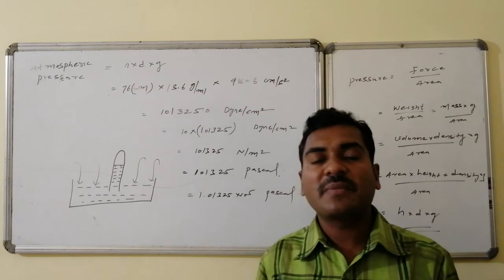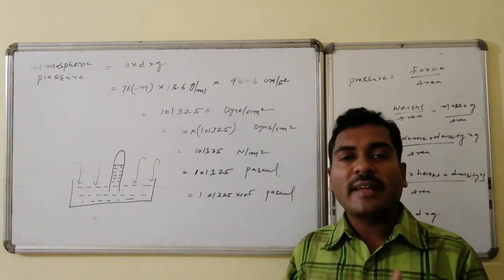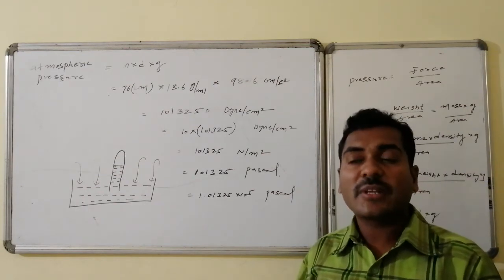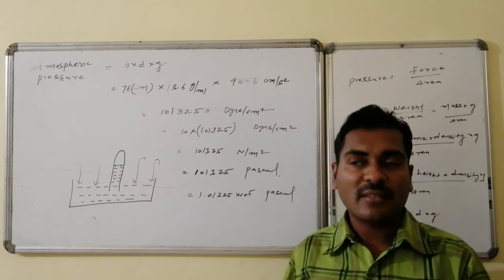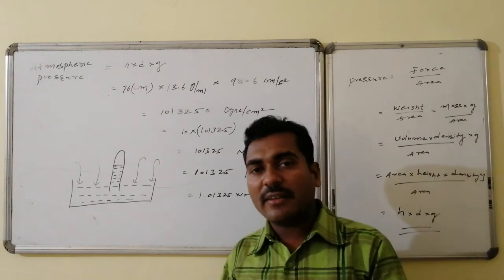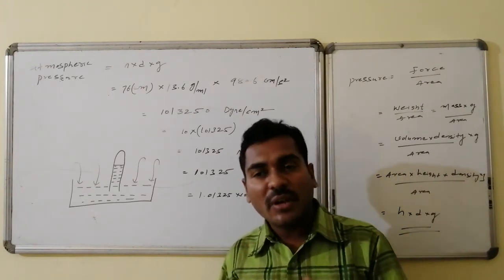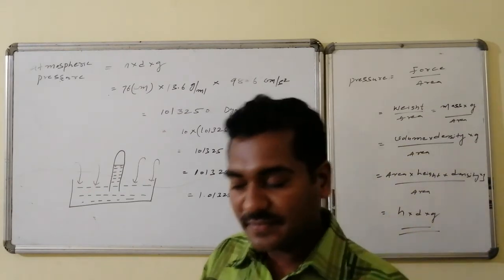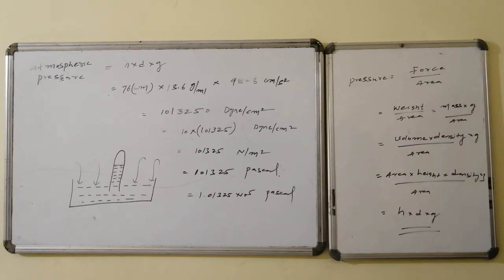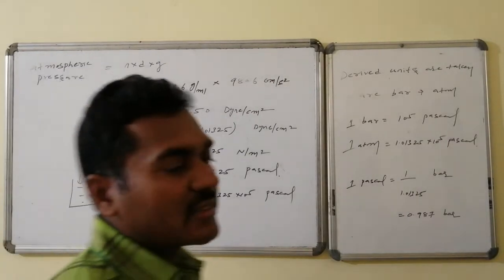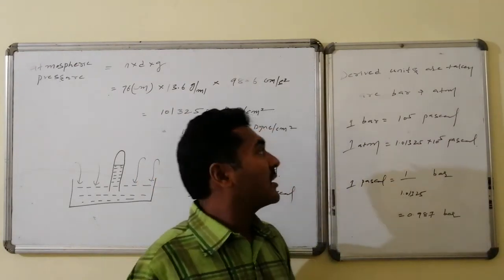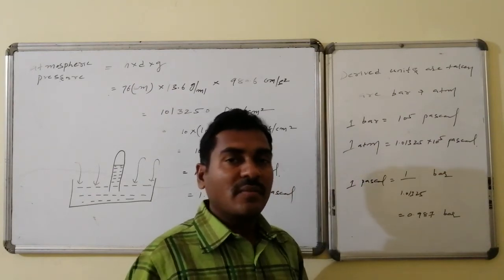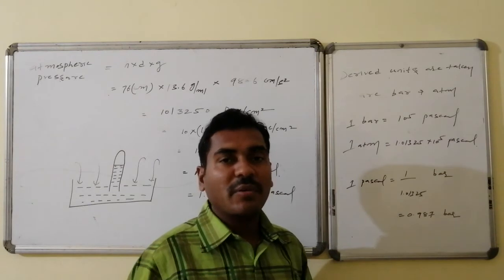Since atmospheric pressure is very large compared to systematic units like dynes per centimeter square, and also appears as 10⁵ multiples in newtons per meter square, the CGS and SI units are not convenient enough. Therefore, new derived units are used: one is bar and second is atmosphere. One bar equals 10⁵ Pascals, and one atmosphere equals 1.01325 × 10⁵ Pascals.